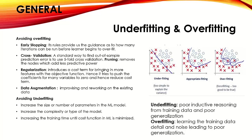To avoid underfitting and overfitting: underfitting generally doesn't happen often, but it is handled by increasing the model parameters and complexity and providing more training. Overfitting is a very common problem in machine learning. Methods to handle it include: early stopping — stop when the model is not validating properly during training; cross-validation; pruning — removing nodes that add little predictive power; adding regularization; and augmenting the data.